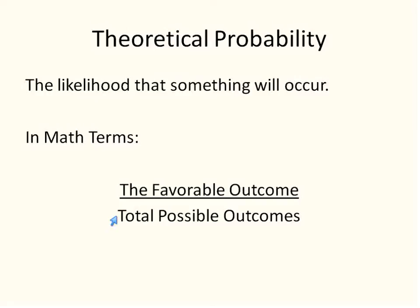A couple of examples. If I have a coin, there are two possible outcomes, so the total possible outcomes would be two. If I want it to be heads, the favorable outcome would be one. So it would be one out of two — the probability that it would be heads. The favorable outcome is basically what you want to happen, and the total possible outcomes are all the different chances.